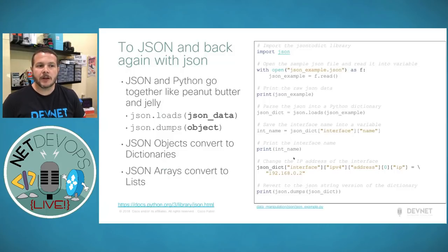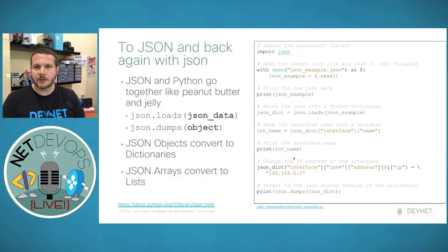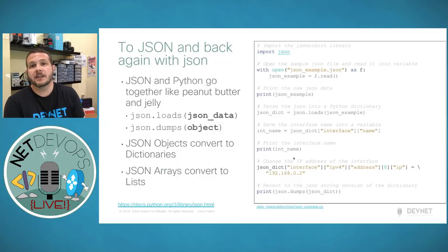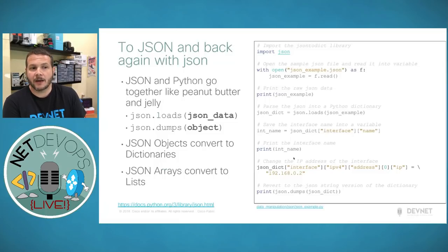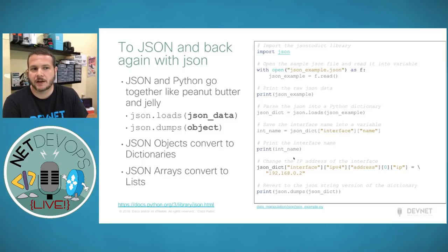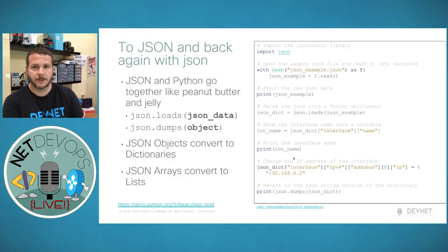There's a built-in library called json with two methods we'll commonly leverage: loads and dumps. The 's' stands for string — load string or dump string. json.loads takes JSON data as a string and converts it into a Python object, often dictionaries or lists. json.dumps converts an object back into a raw JSON string. Just like with XML, let's see this in action.